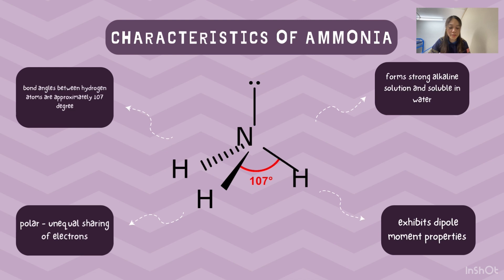Secondly, ammonia molecule is polar because it has unequal sharing of electrons. Thirdly, it forms strong alkaline solution and is soluble in water.